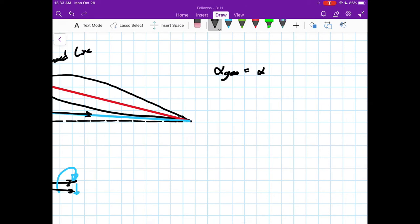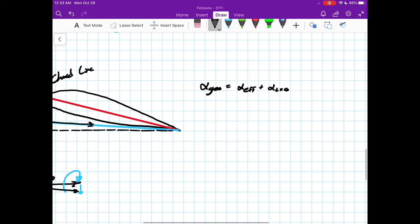I'll write this out mathematically. What this boils down to is: alpha geometric is equal to alpha effective plus alpha induced.